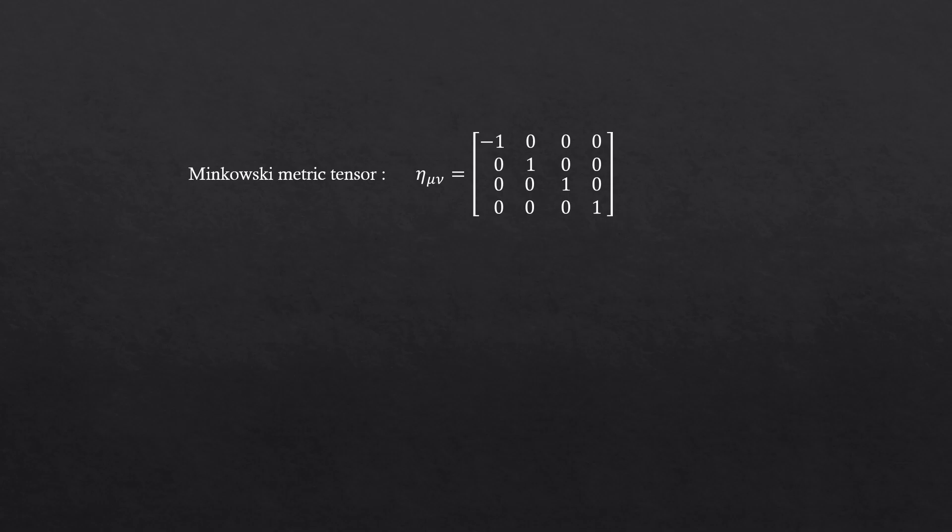That's why the matrix looks simple. It's just negative 1, 1, 1, 1 diagonally. And because this tensor has two indices, mu and nu, it's a rank 2 tensor.